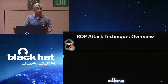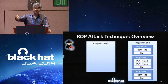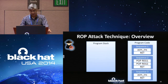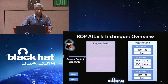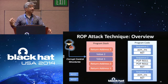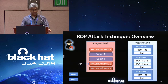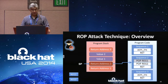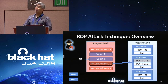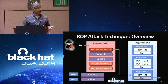In classical return oriented programming: a program has a stack and code with sequences ending in a return. The payload—consisting of return addresses and values—is put on the stack. The stack pointer points to the first return address, which executes the first sequence, then returns to the stack to the second address. The stack pointer is incremented, the second sequence runs, popping values from the stack into registers. This continues until all gadgets are executed.